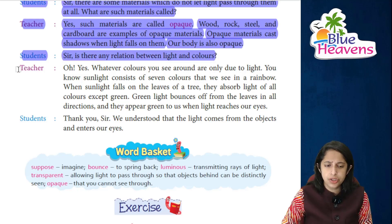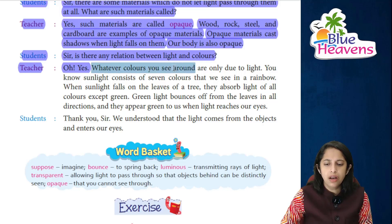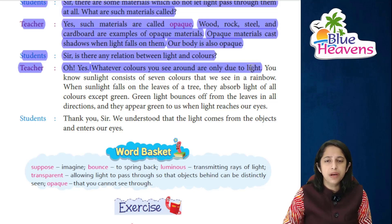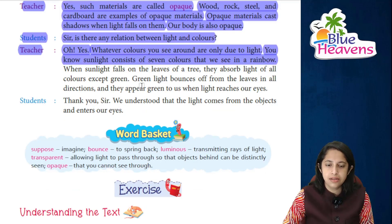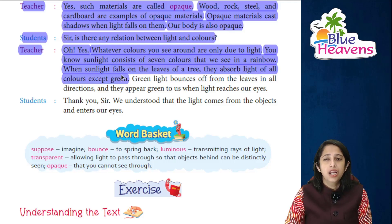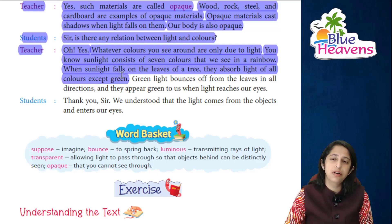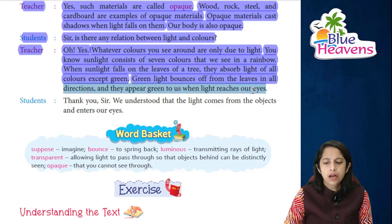Students ask: is there any relationship between light and color? The teacher exclaims: oh yes! Whatever colors you see around you are only because of light. Sunlight consists of seven colors that we see in a rainbow — VIBGYOR: violet, indigo, blue, green, yellow, orange, and red. When sunlight falls on leaves, they absorb all colors except green. The green color is due to the pigment chlorophyll — green light bounces off the leaves and reaches our eyes.